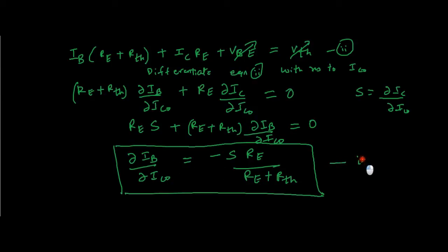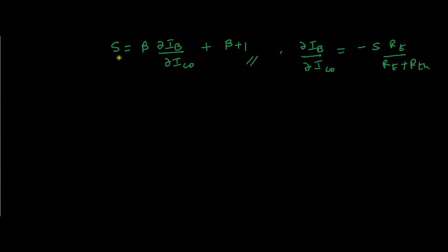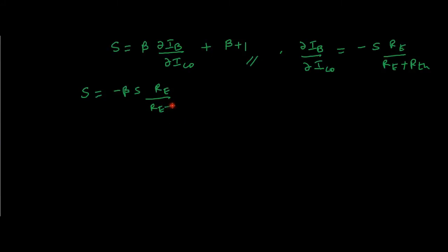Let this be equation 3. We substitute that value into our standard equation. So the stability factor S equals β·(δIB/δICO) + (β + 1). For voltage divider bias we got δIB/δICO = −S·RE/(RE + RTH). Substituting: S = β·(−S·RE/(RE + RTH)) + (β + 1), which gives S = −β·S·RE/(RE + RTH) + (β + 1).